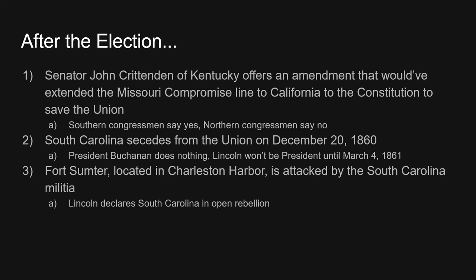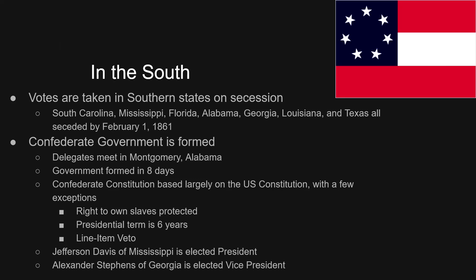Abraham Lincoln says he doesn't want to fight the South — that as long as the South doesn't do anything, the North won't either. But unfortunately, in April of 1861, the South Carolina militia attacks Fort Sumter in Charleston Harbor, and Lincoln has no choice but to declare that South Carolina is in open rebellion. Very quickly, votes in the South are taken on whether to leave the union. By February 1st, 1861 — once again before Lincoln is even president — South Carolina, Mississippi, Florida, Alabama, Georgia, Louisiana, and Texas all leave the union and begin to form their own government.